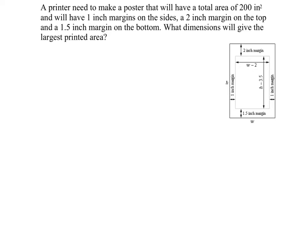In this optimization problem, we're going to do one with a poster. A printer needs to make a poster that will have a total area of 200 square inches and will have one-inch margins on the sides, a two-inch margin on the top, and a one-and-a-half-inch margin on the bottom.